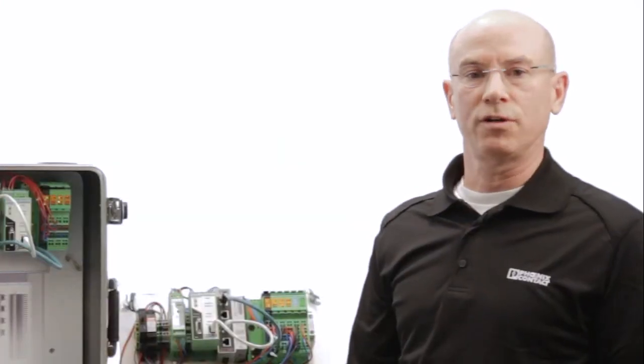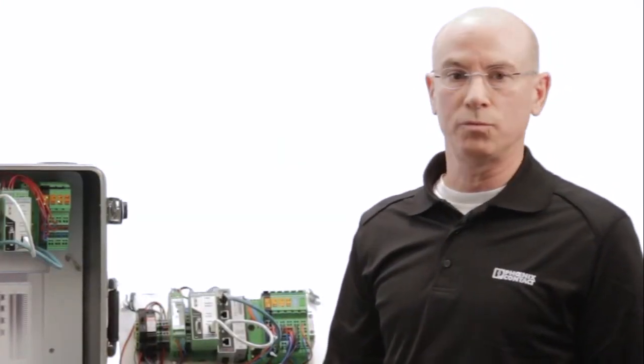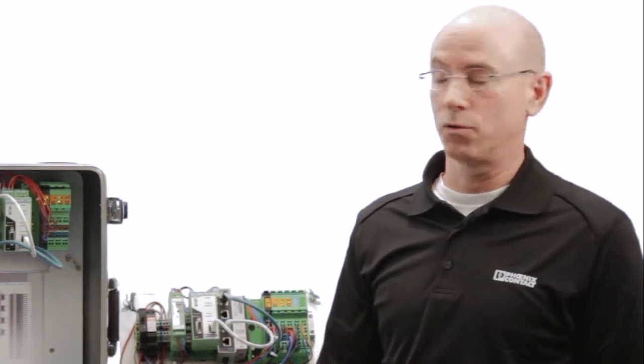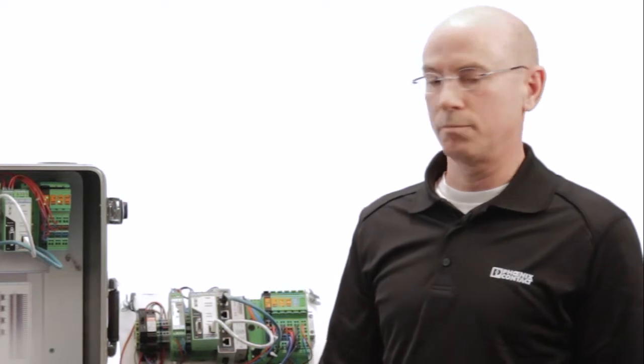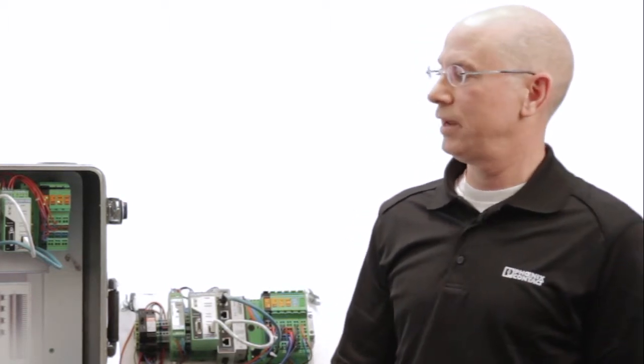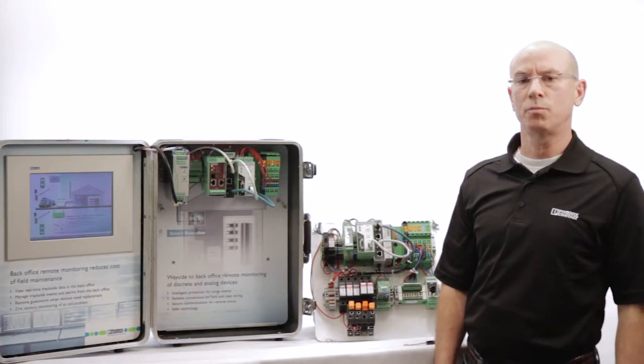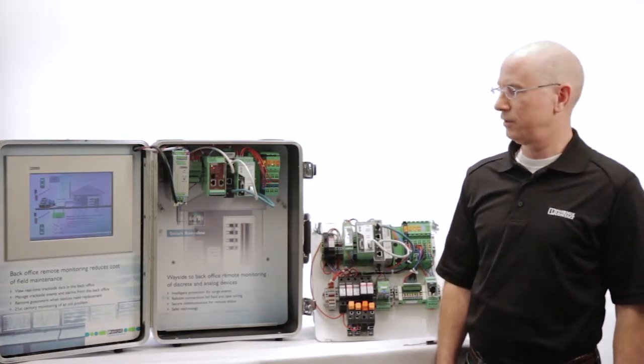Fault indications are communicated to the HMI through software package called Bizu Plus. Imagine getting a cell phone message or text or an email telling you that a certain bungalow with certain circuits that have been affected by lightning strikes. This saves the cost of labor and undue parts replacement that may or may not need to be replaced.